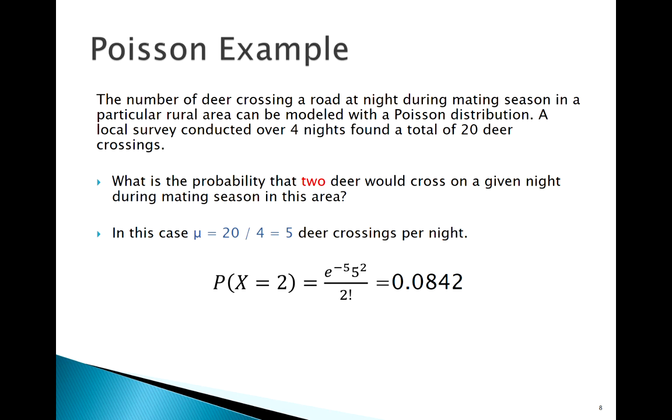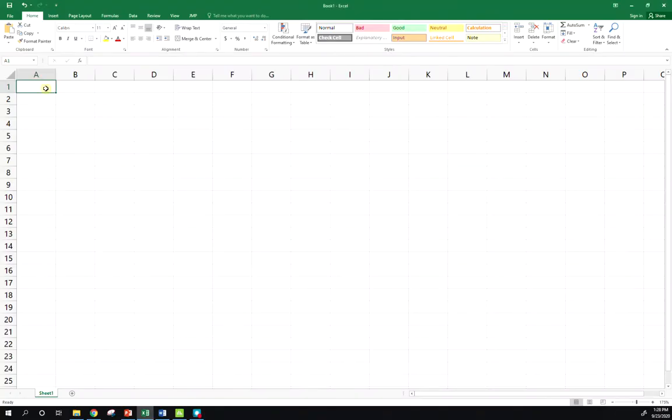It's low because we expected five, but it's possible to get two, maybe about eight percent of the time. Plugging into the formula not bad, I would argue it's even a little bit easier than the binomial formula, but we also want to know how to use technology to check ourselves.